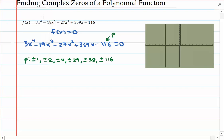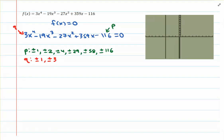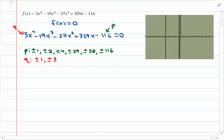The denominators are going to come from the numbers that divide the leading coefficient — that's going to be our list for Q. Numbers that divide 3, luckily a smaller and prime number for us: plus or minus 1 and plus or minus 3. Now let's go ahead and build our list of potential rational zeros, the list for p over q.